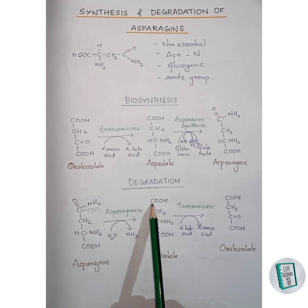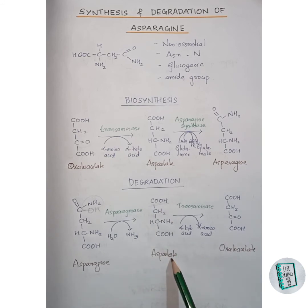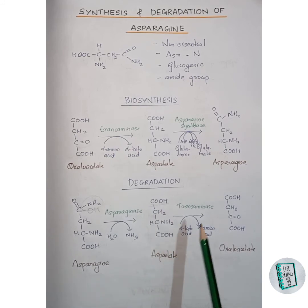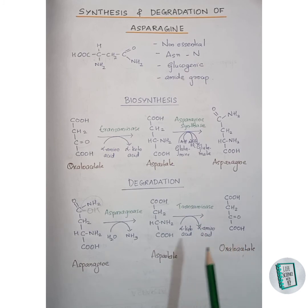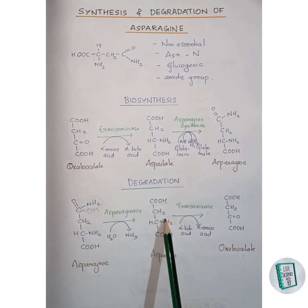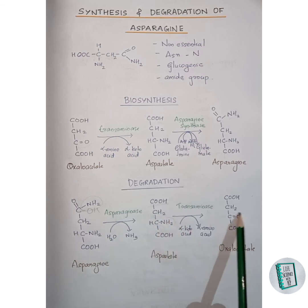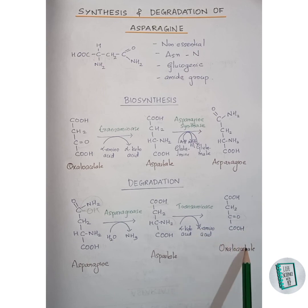The remaining OH group of the water molecule attaches to this carbon, forming the C-OH group, thus aspartate is formed. This aspartate then, in the presence of transaminase enzyme, forms oxaloacetate — the amino group gets replaced by a keto group and oxaloacetate is formed. This is the degradation of asparagine.